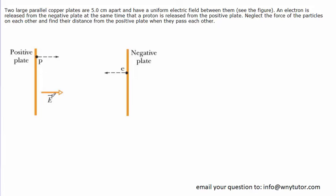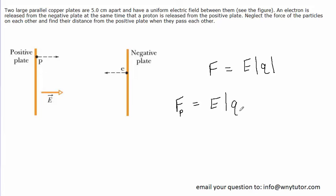Let's take a look at the equation for that electric force. The equation tells us that the electric force experienced by the proton or the electron is equal to the magnitude of the electric field multiplied by the magnitude of the charge. For the proton, the electric force equals the electric field multiplied by the magnitude of charge on a proton. For an electron, the same applies: the electric field multiplied by the magnitude of the charge on the electron.